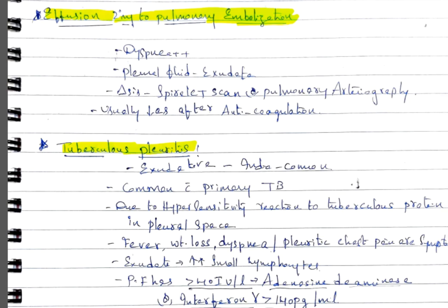Tuberculosis pleuritis is very common in India, exudative type, common with primary types of TB. It happens due to hypersensitivity reaction to tuberculous protein in the pleural space, not due to mycobacterium tuberculosis itself. Patient presents with fever, weight loss, dyspnea, and pleuritic chest pain. There's increased number of small lymphocytes. Pleural fluid has greater than 40 international units per ml of adenosine deaminase or interferon gamma greater than 140 picograms per ml.